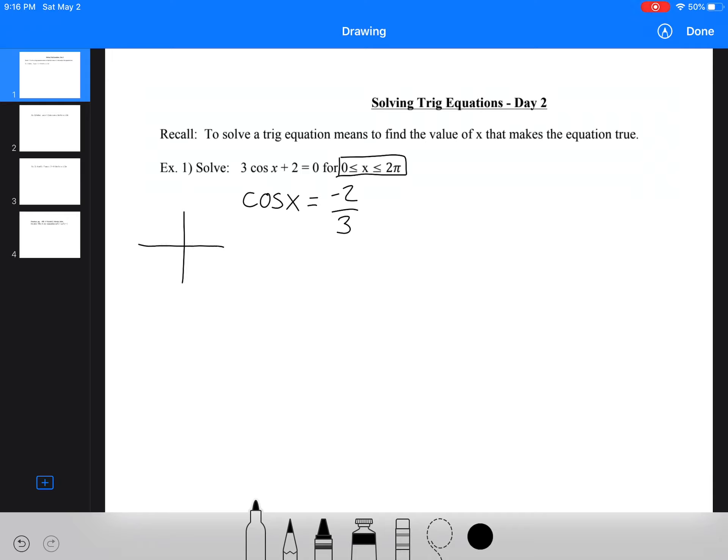So cos is going to be negative in which quadrants. So we're going to use our cast rule. We know cos is negative in two and three. We're going to find our related acute angle by doing the cos inverse of the positive of two over three. And I'm using radians. So I'm going to do two divided by three, and then I'm going to do the cos inverse of that, and I get 0.84.